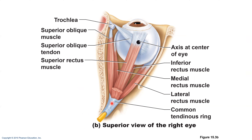Here's another view where you can see the common tendinous ring — all four rectus muscles originate from this ring and as they insert into the sclera, the white part of the eye.